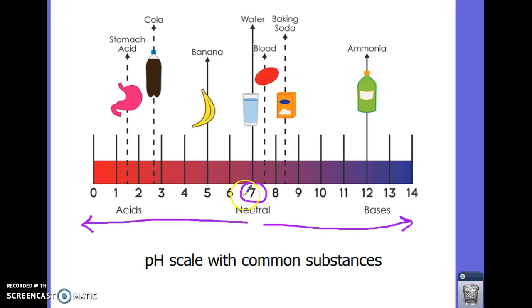Anything greater than 7 this way is a base. And remember, the further you go away from 7, the stronger they are. So these are strong acids. These are strong bases. So therefore, if something is a 6 or an 8, they would be considered weak.